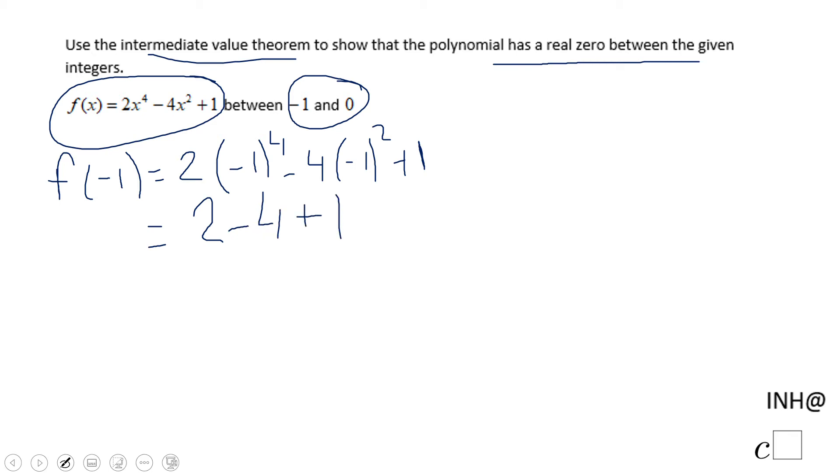We can calculate this now: 2 minus 4 is -2, plus 1 is -1. The value of the function f at -1 is -1.